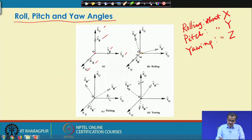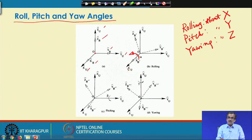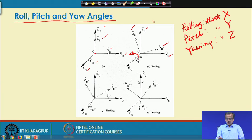For example, we first take the rotation about xu by an angle alpha in the anticlockwise sense, that is plus alpha. If I take rotation about xu, and initially xu and xb were coinciding, then xb prime will remain the same as xu because I have taken the rotation about xu. However, yb prime will be different from yu, and zb prime will be different from zu. This is what we mean by the rotation about x.